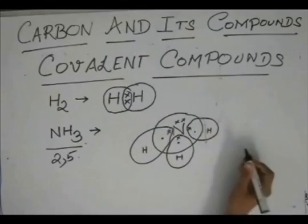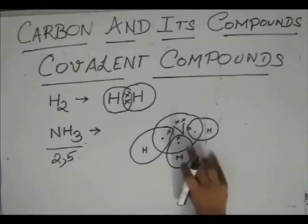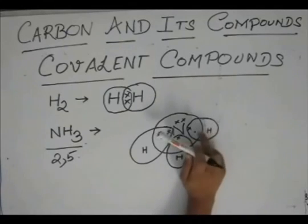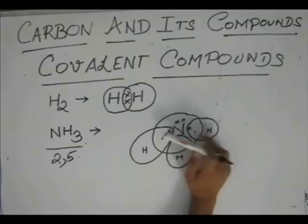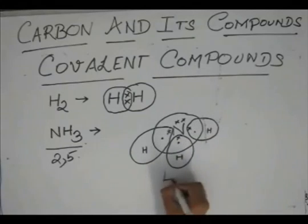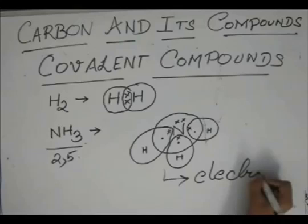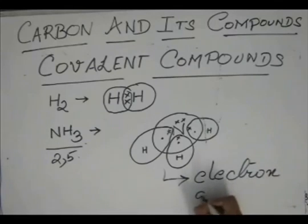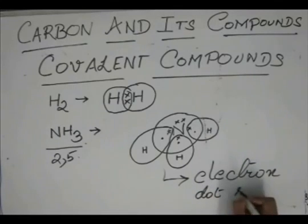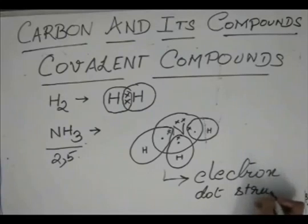So, these kind of structures where the electrons, the shared electrons are represented by crosses and dots, they are called electron dot structures.